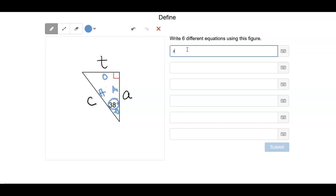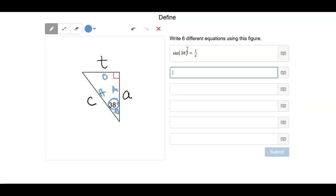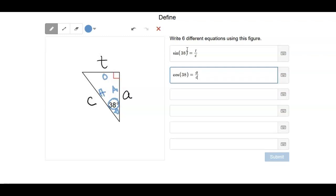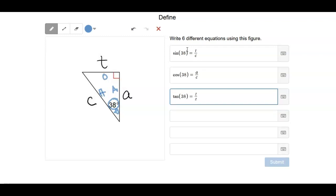So we could do the sine of 38 is equal to t over c. We could do the cosine of 38 is equal to a over c, or we could do the tangent of 38 is equal to t over a.